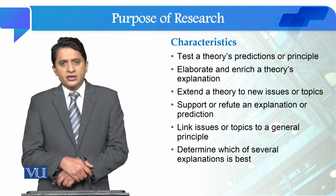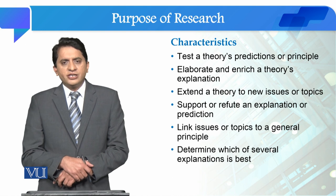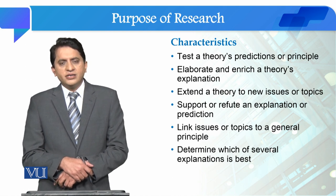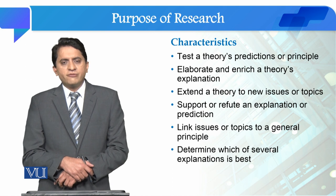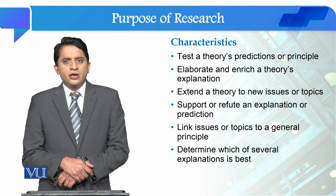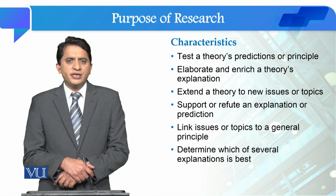On the basis of the results of explanatory research, we become able to generalize findings to a larger population. For instance, if we are conducting explanatory research on the mental health of people during COVID-19 and we investigate it with three kinds of variables — economic, social, and mental well-being — then on the basis of the results we can generalize to the larger population. We also try to determine which of several explanations is best.